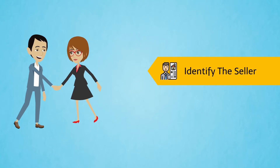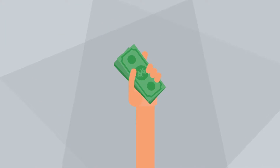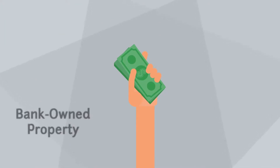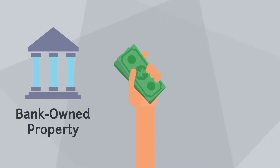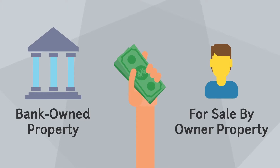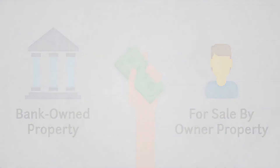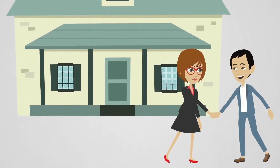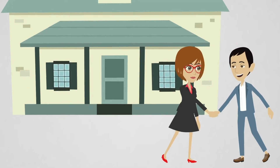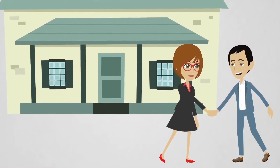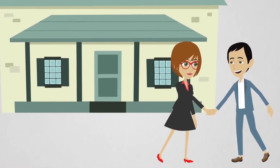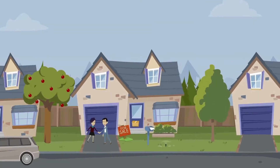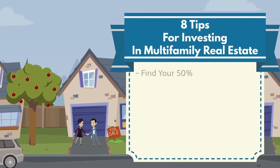Our last tip for multifamily investors is to always identify the seller of the property you're considering. For example, there's potential to save when you purchase a bank-owned or for-sale-by-owner property, but these property types will follow different processes. Remember, every property's purchase price will be affected by the motivation of its seller, and investors will better know what to expect from a deal if they are fully aware of the seller's circumstances.